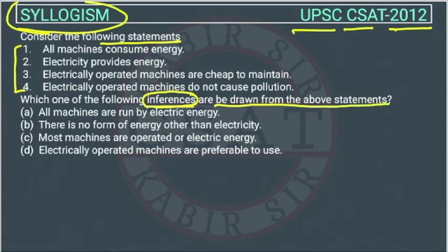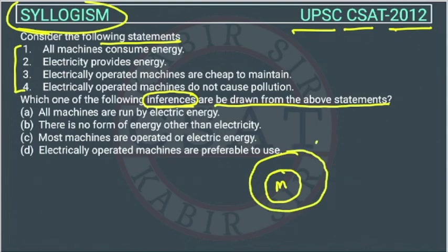We will try to solve it through a Venn diagram. The first statement: all machines consume energy. So this is the Venn diagram of machines — all machines consume energy. Electricity provides energy, so electricity is providing energy.